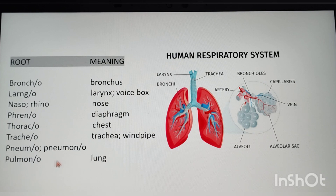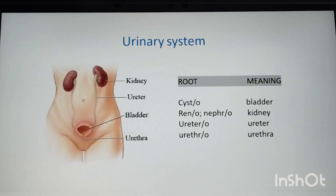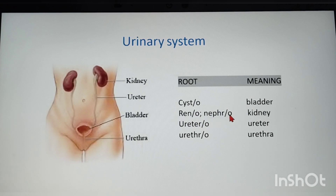Coming to the urinary system: cysto — bladder; reno/nephro — kidney (renal means related to kidney; nephropathy means disease of the kidney); uretero — ureter; urethro — urethra.